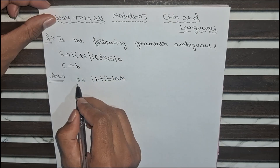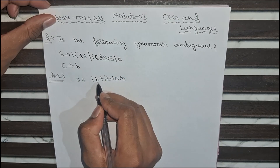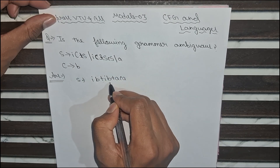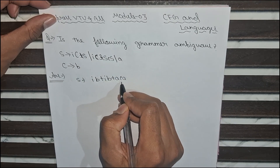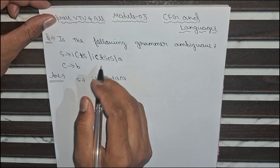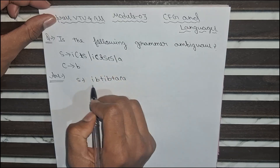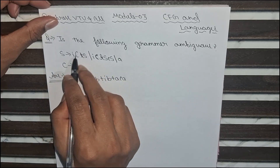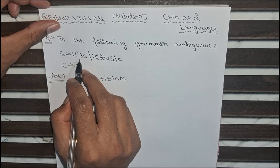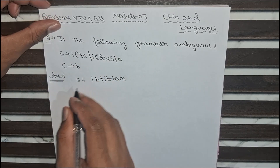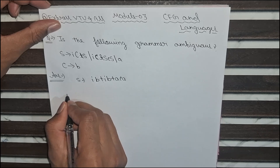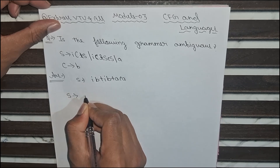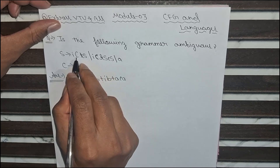We have taken a string: i b t i b t a e a. With the help of this string we will prove this grammar is ambiguous.